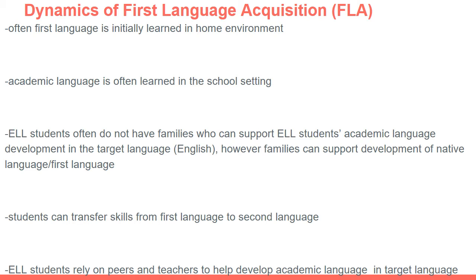The first language is initially learned in the home environment, and then academic language is learned in the school setting. Many times the language spoken at home is informal, especially if family members have only had a K-12 high school education. The formal academic language seen on academic tests and in textbooks and more complex, content-specific texts will be learned in the school setting.